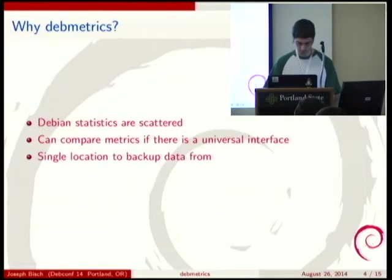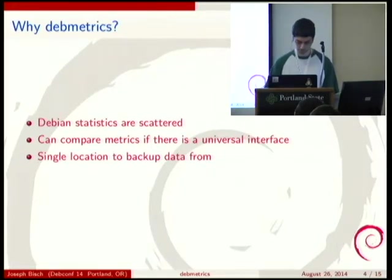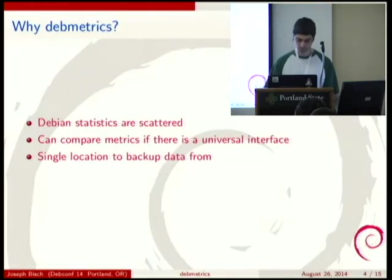Why DebMetrics? DebMetrics provides a universal interface to metrics. This is useful because statistics are scattered all over the place. A universal interface allows metrics to be compared in ways that are not possible if the metrics are scattered, and also makes backing up data easier because there is a single location to back up from.